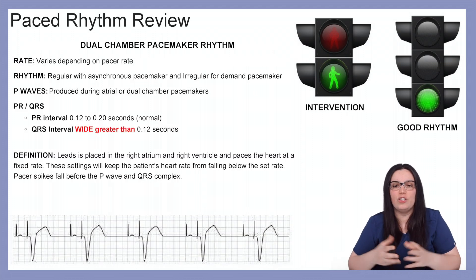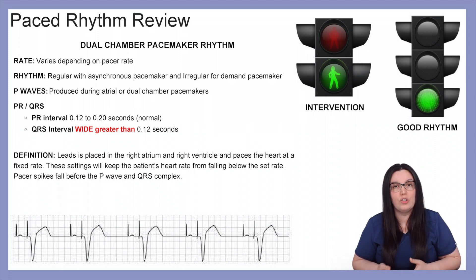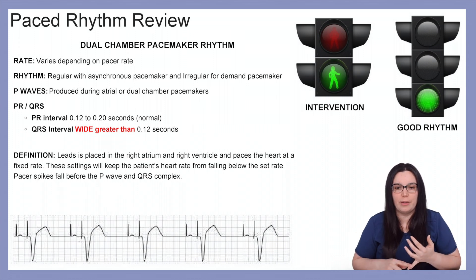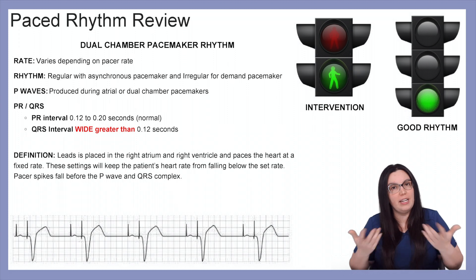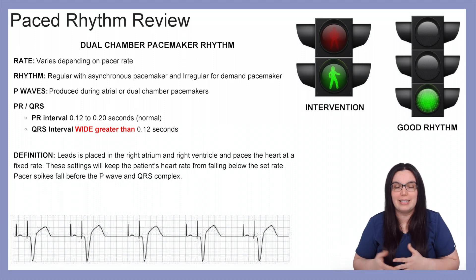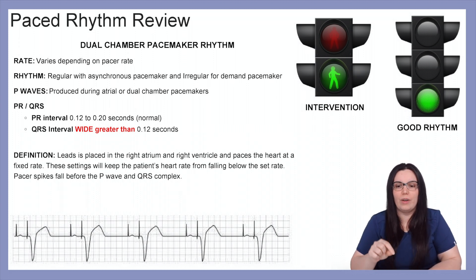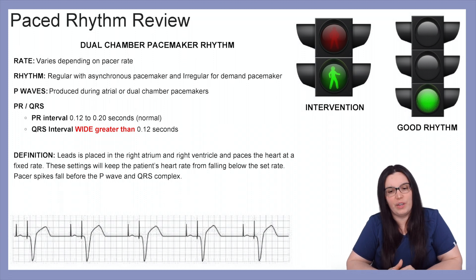Lastly, we're going to take a look at dual chamber pacemaker rhythms. Rates again are going to vary depending on what the pacemaker is set at. Rhythms will either be regular with asynchronous pacemakers or irregular with demand pacemakers. P waves are either produced in the atriums or with our dual chamber pacemaker. The PR interval should be normal because we have a dual chamber pacemaker, and the QRS is going to be wide, ugly, and disgusting — greater than 0.12 seconds. Leads are placed in the right atrium and the right ventricle and pace the heart at a fixed rate.